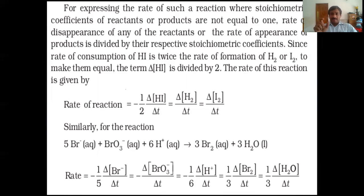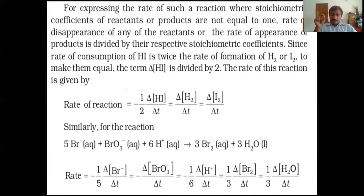In such cases, if the number of moles of reactants and products are different, we have to calculate the rate of reaction by dividing each concentration-time term by the stoichiometric coefficients — that is, the number of moles of that particular substance present in the balanced chemical equation.